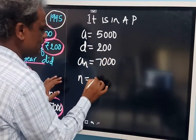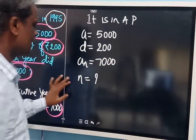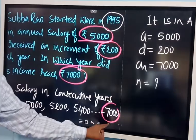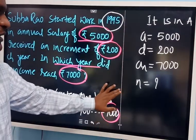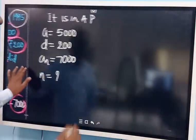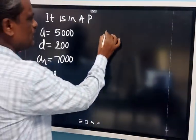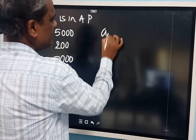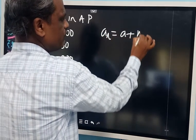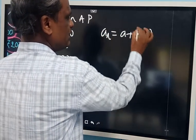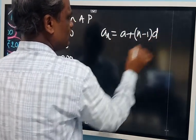We need to calculate N — in which year does he get Rs. 7000? That means we need to find out N. So let us use the formula: AN is equal to A plus (N minus 1) into D. This is the formula.